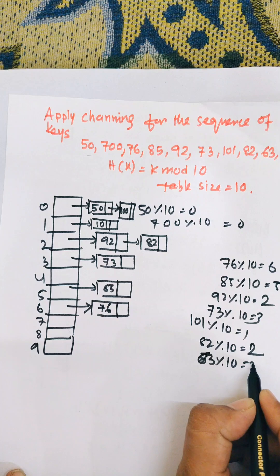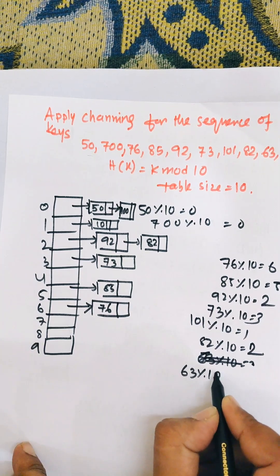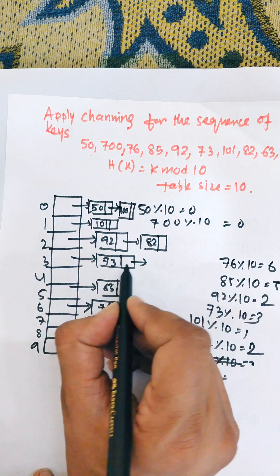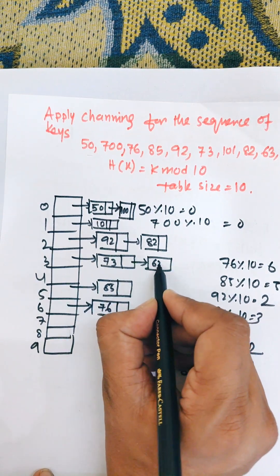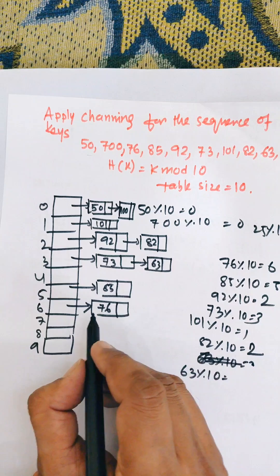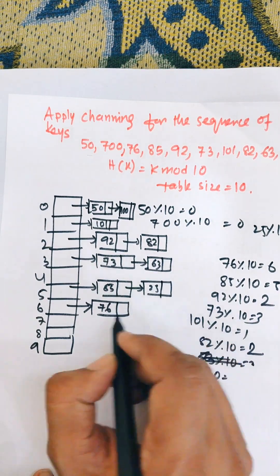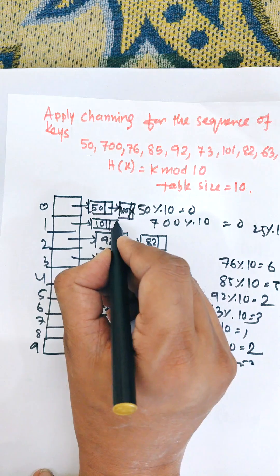Then 63, 63 mod 10 equal to 3, then it will connect to the next node after 73. Next, 25 mod 10 equal to 5, and then it adds 25 after 85. Finally, this null, there is no node, so the final node is null.